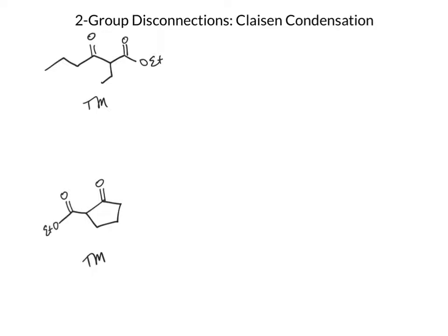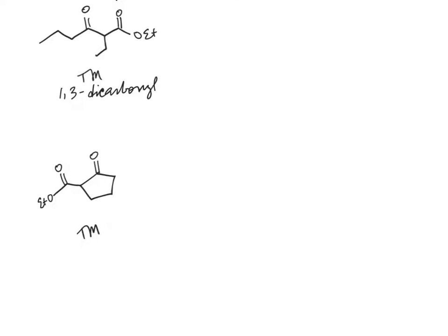Let's look at a few examples of target molecules whose functional group pattern leads us to a Claisen condensation reaction. In this first example, we have a 1,3-dicarbonyl — specifically a beta-ketoester — and it's that 1,3-dicarbonyl pattern that we're looking for that will point us to a Claisen condensation.